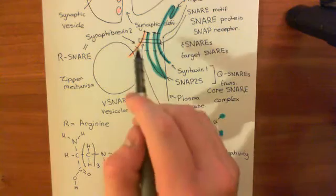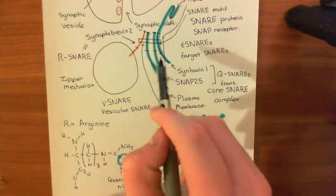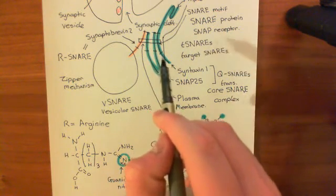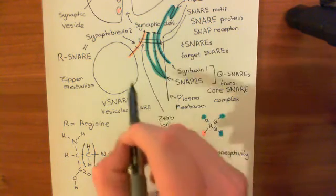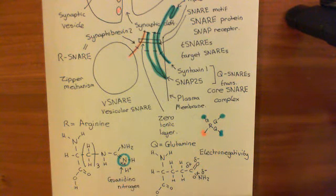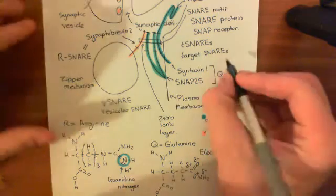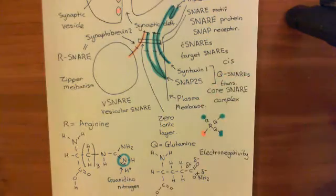In fact, you could put all three of these proteins in the same membrane — for instance, if they were all in the plasma membrane — and they'd still form one of these core SNARE complexes. But in that case, it would be called a cis-core SNARE complex. Cis, spelled C-I-S, means on the same side.